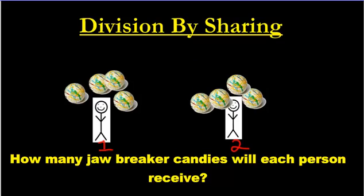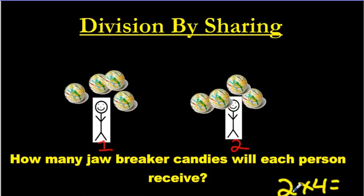Now you can check this answer using multiplication. What you do is cover up the 8 and the divide sign — just ignore them. Take the other two numbers and multiply them. I know it says divide, but the way you check division is with its opposite — multiplication. So you do 2 times 4, and 2 times 4 is 2 groups of 4, which is 8. That 8 matches the 8 we started with, so you know you did it correctly.